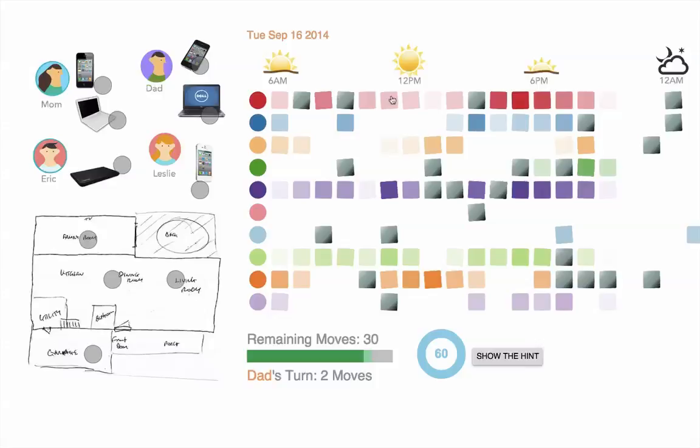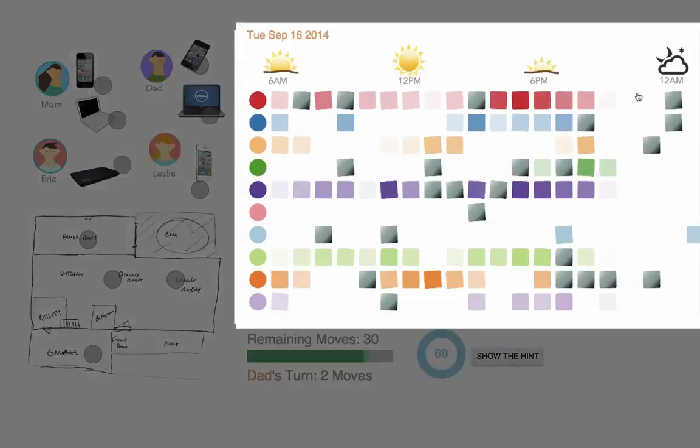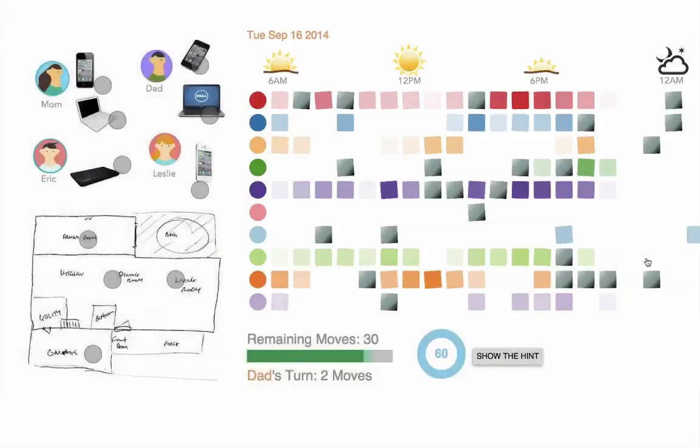On the right-hand side, the colorful grid represents the activity levels of those activity sources throughout that particular day.